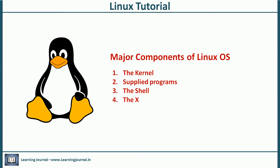The Linux operating system has four major parts: the kernel, supplied programs, the shell, and the X.